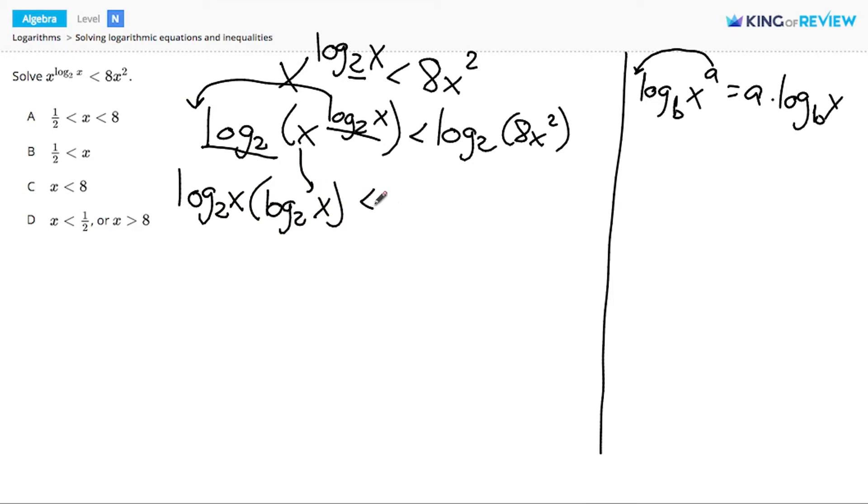On the right side, I need to split up 8 and x squared first, and I can do that by remembering that the log base b of x times y is equal to the log base b of x plus the log base b of y. So I can split this up into the log base 2 of 8 plus the log base 2 of x squared.